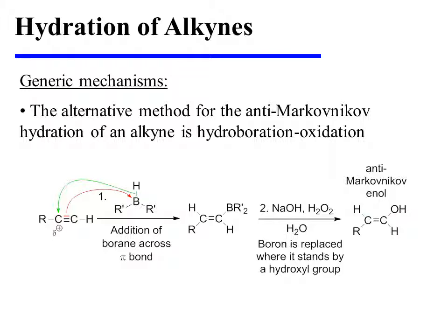Let's now turn our attention to a mechanism for the alternative hydration method to yield the anti-Markovnikov regioisomer, and this method is hydroboration-oxidation. It very closely mimics the hydroboration-oxidation of alkenes. In the first step of the reaction, a borane is added across an alkyne pi bond.